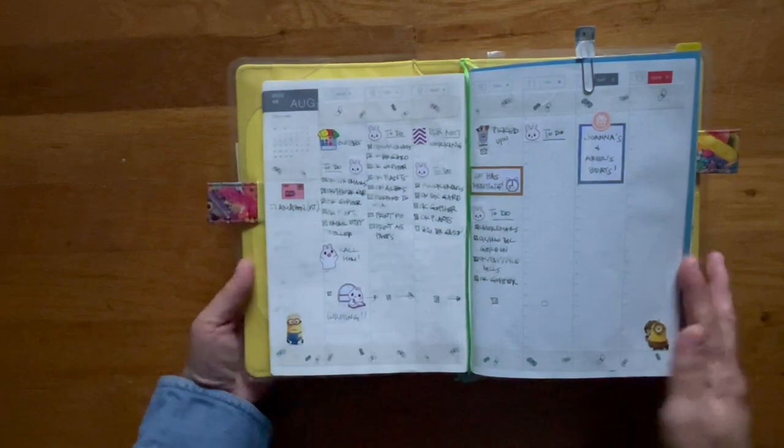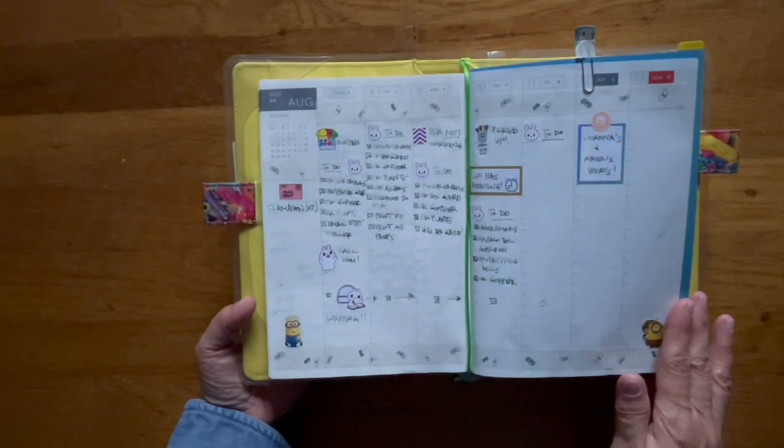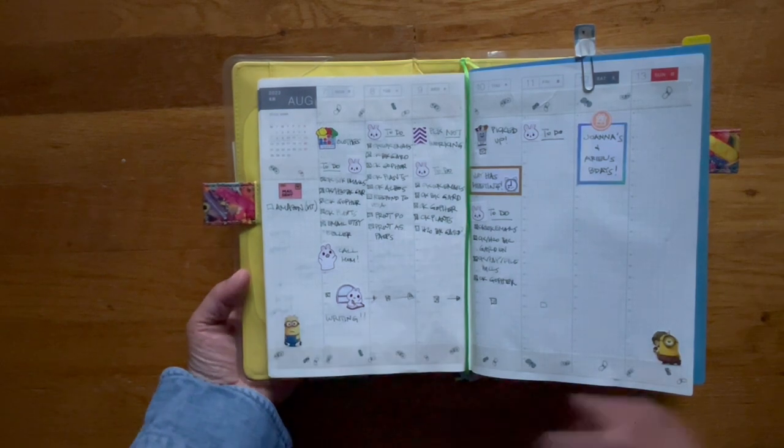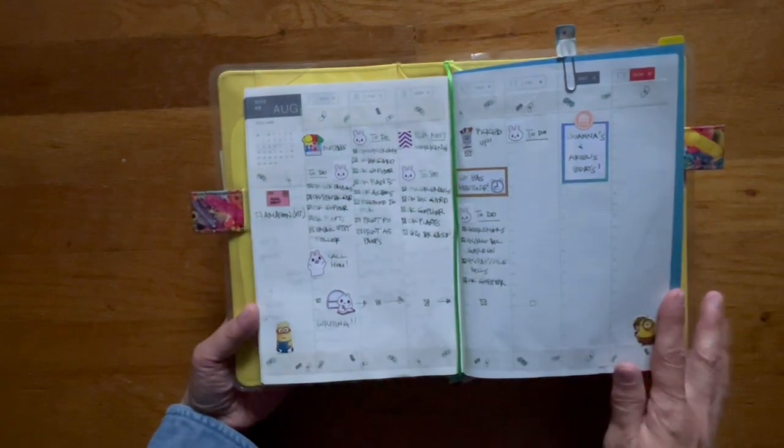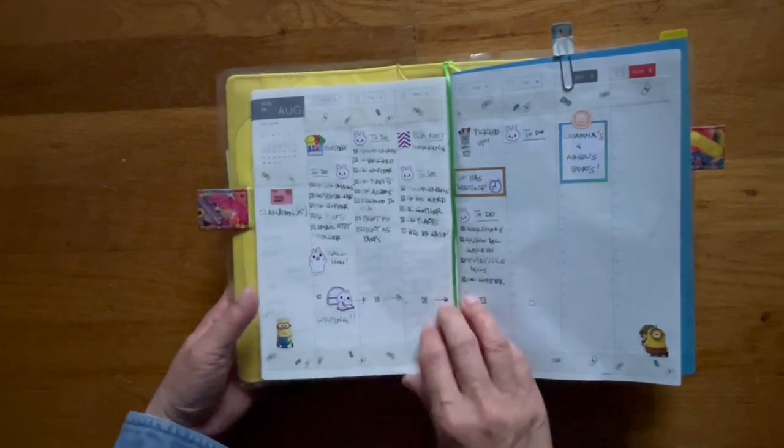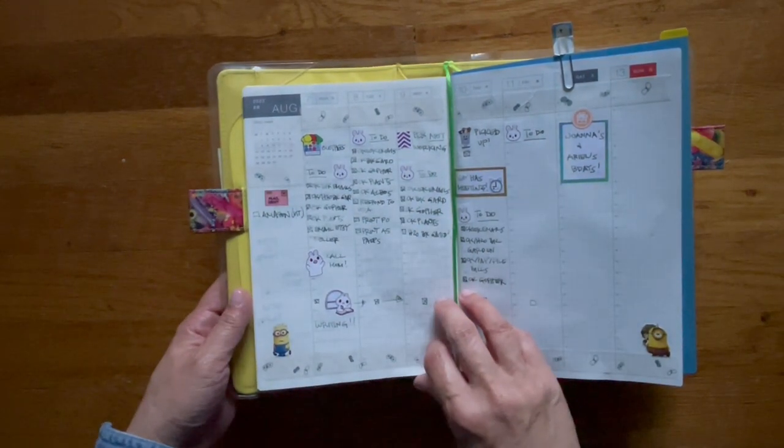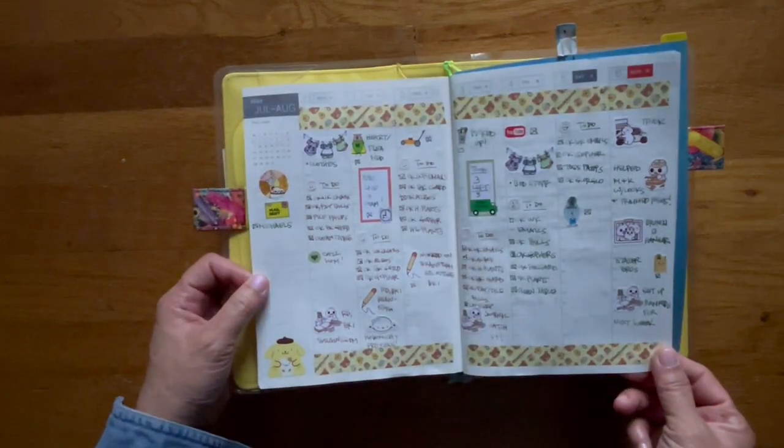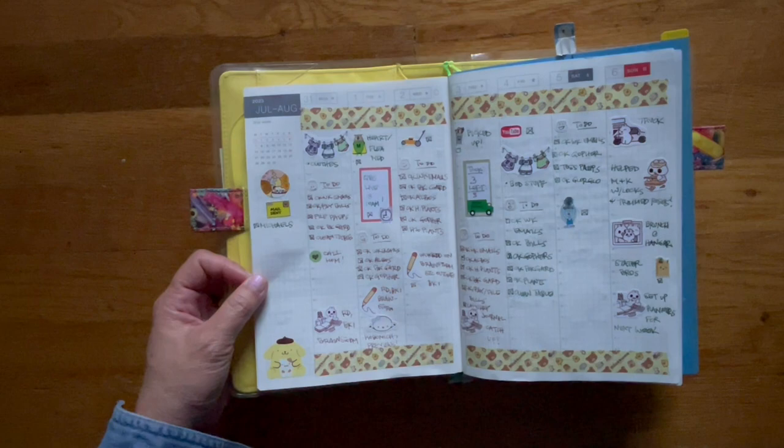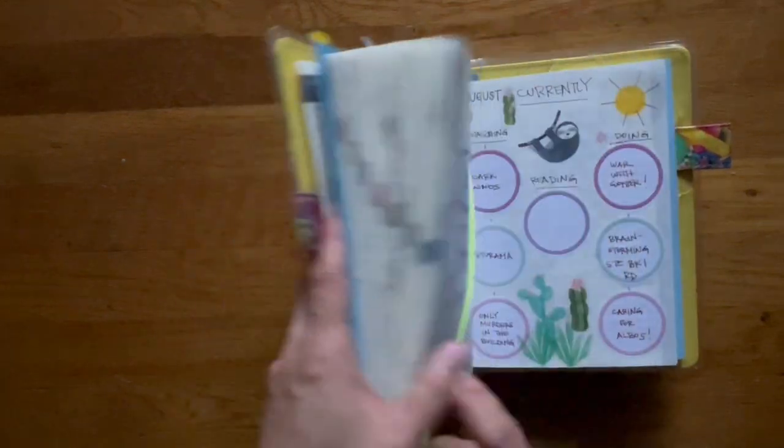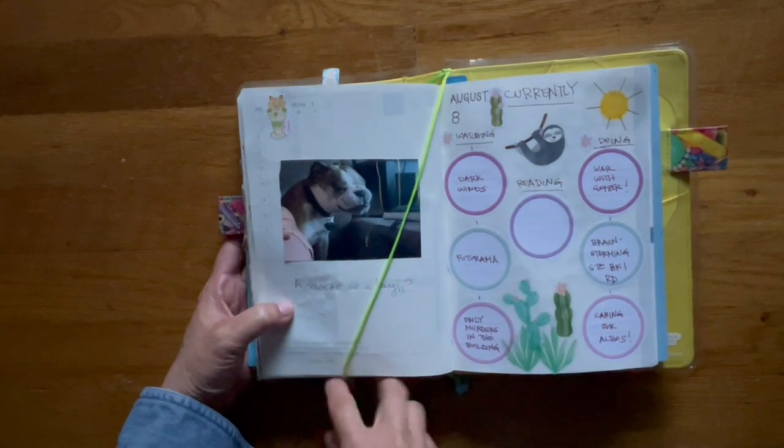So this is what this past week looked like. The washi tape is from Hobonichi. And then the stickers are from Happy Planner and then these are ones that I created. This is for last week. I think this came out pretty cleanly. And then let me just show you from the start of August what I've done.